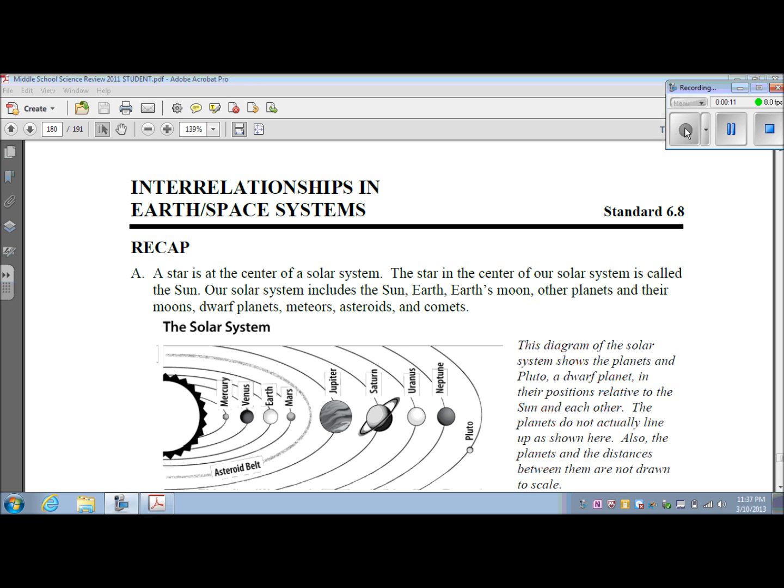A star is at the center of a solar system. The star in the center of our solar system is called the Sun. Our solar system includes the Sun, Earth, Earth's moon, other planets and their moons, dwarf planets, meteors, asteroids, and comets.